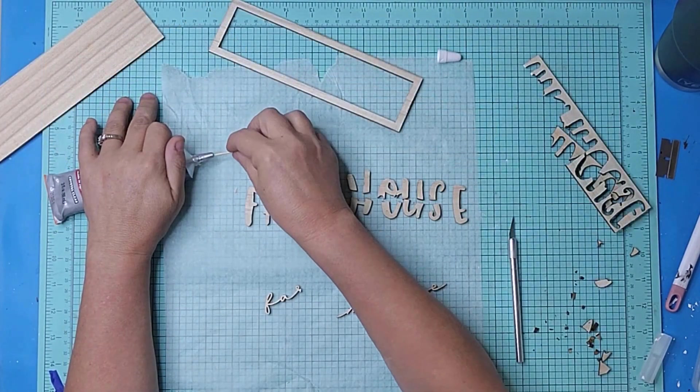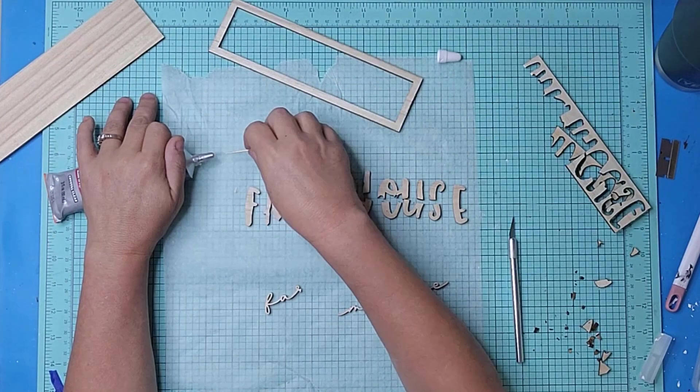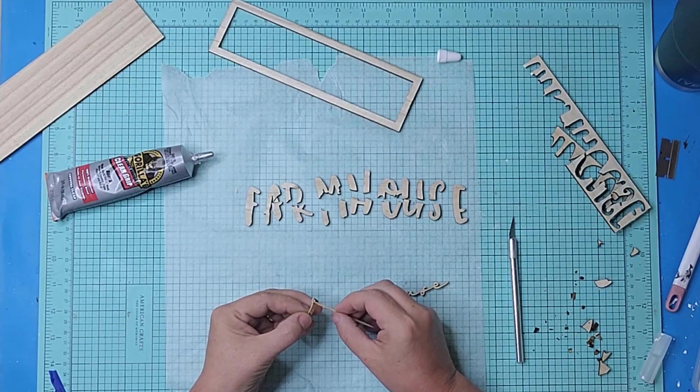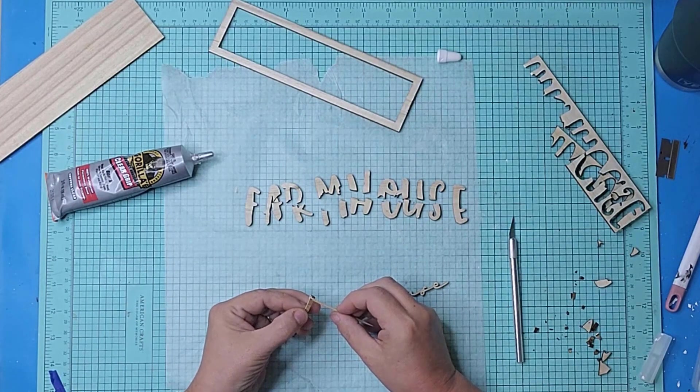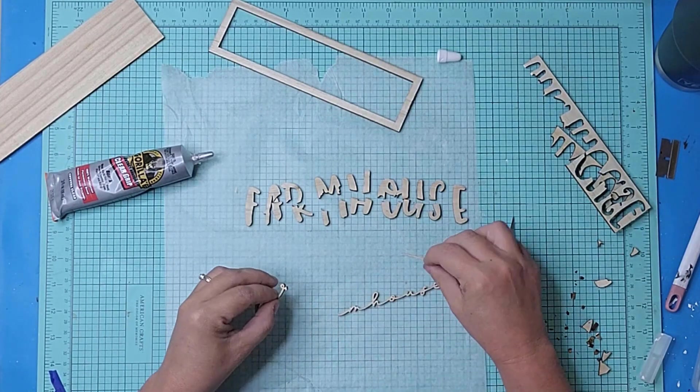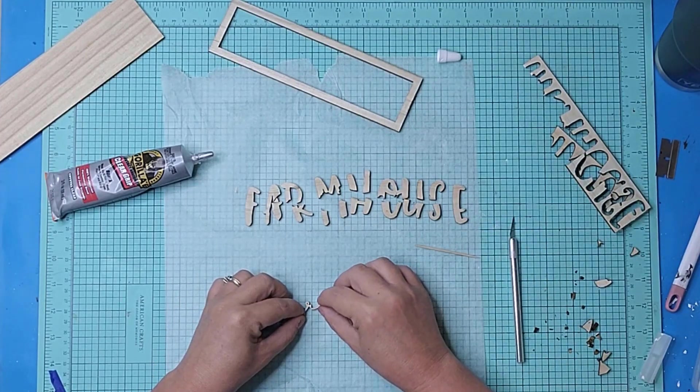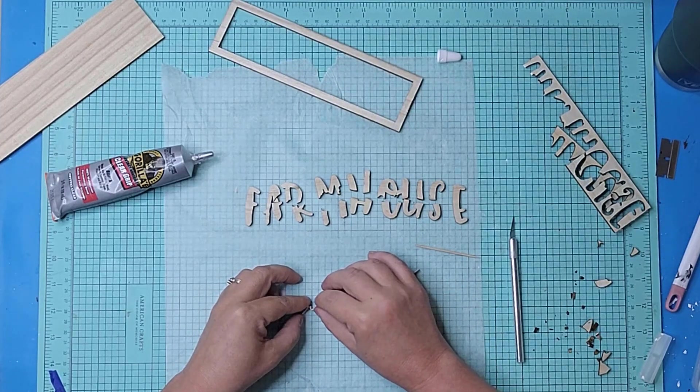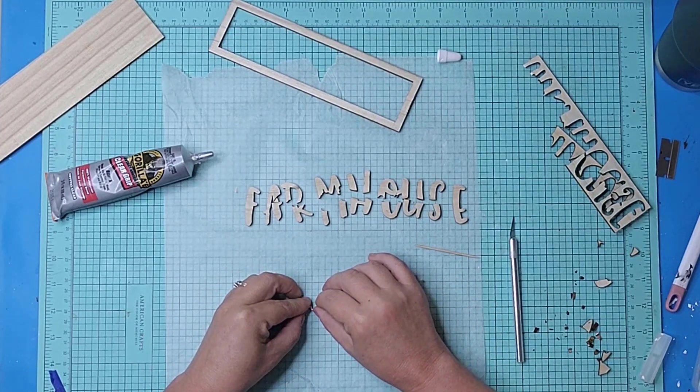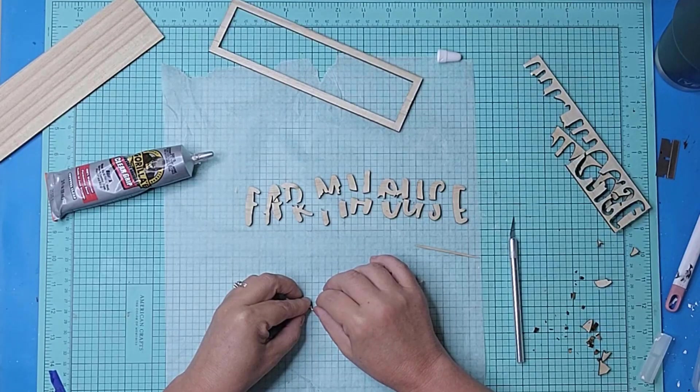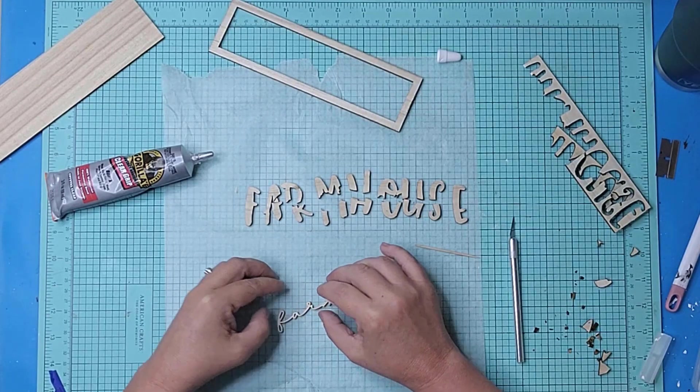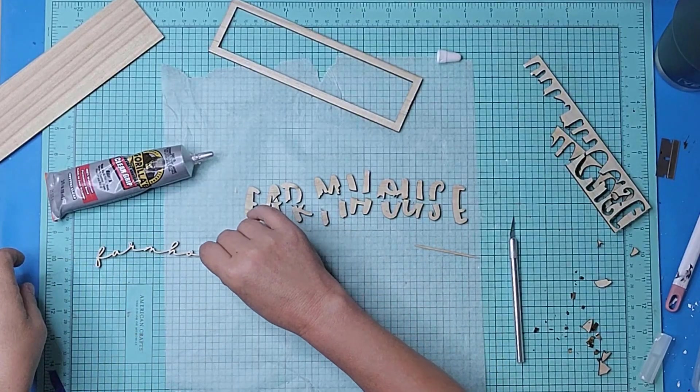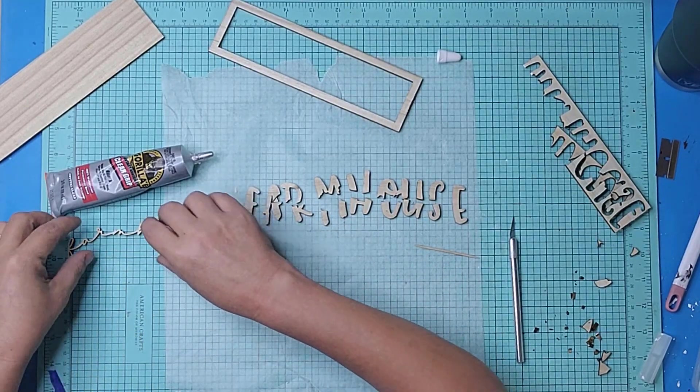I used some Gorilla Clear Grip glue and a toothpick. I placed a small dab of glue on the edge and held it in place for a moment. I recently found this glue and I have to say I love it. It doesn't set up as quickly as hot glue so it gives you a moment to get everything in line and it has a better hold than hot glue. This is definitely my go-to glue for projects like this.